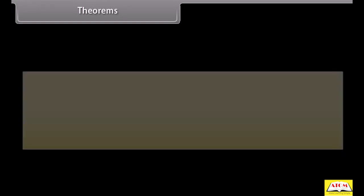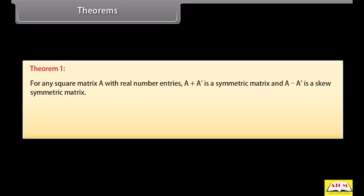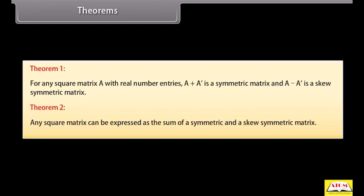Theorems: For any square matrix A with real number entries, A plus A' is a symmetric matrix and A minus A' is a skew-symmetric matrix. Any square matrix can be expressed as the sum of a symmetric and a skew-symmetric matrix.